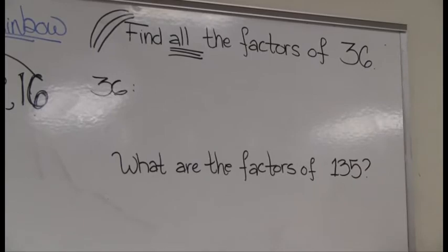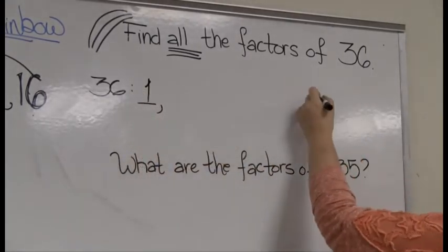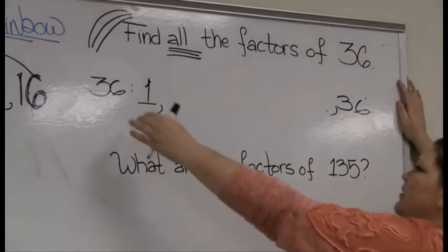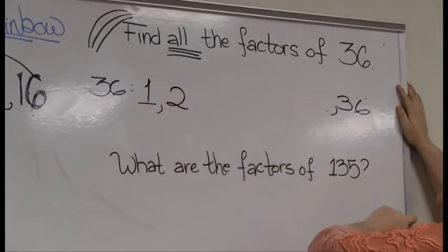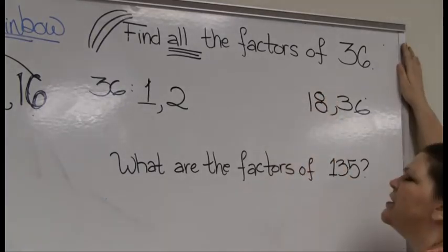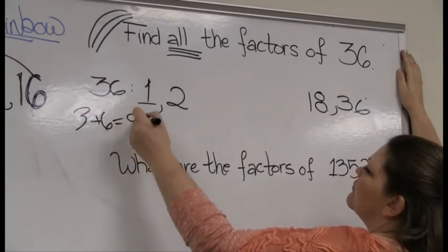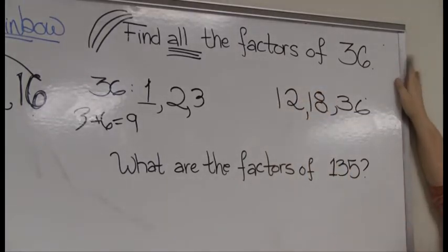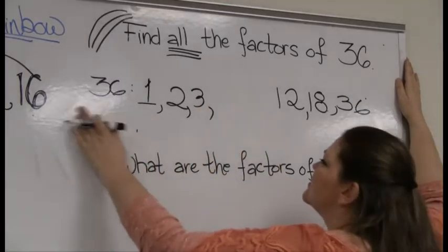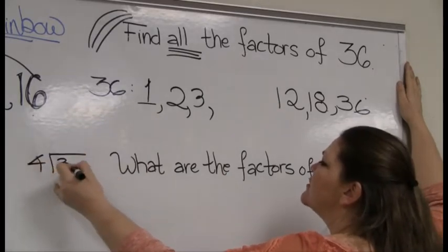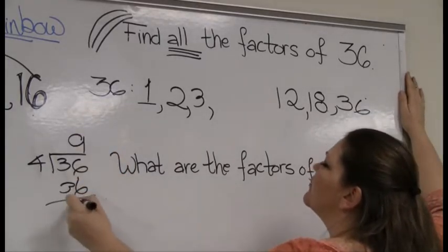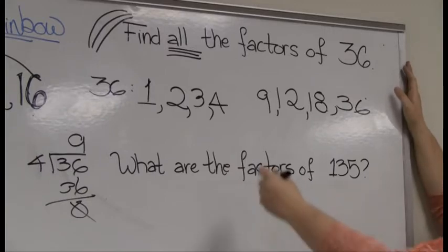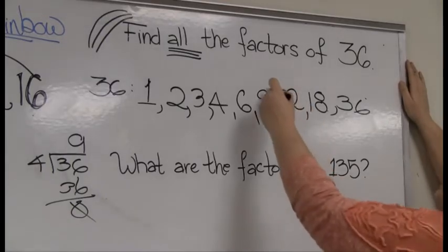A factor rainbow always starts with 1 and always ends with the number itself — 36. I'm giving myself room this time; I learned my lesson. It's an even number, so 2 times 18 is 36. Does 36 divide by 3? Sum of digits will tell me yes — 3 times 12. Does 36 divide by 4? That's a fact I should have memorized — 4 times 9 is 36. Does 36 divide by 5? No. Does it divide by 6? Yes — 6 times 6 is 36, so 6 is right in the middle. I am done.